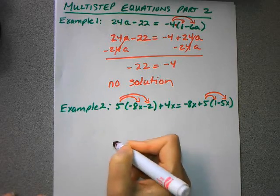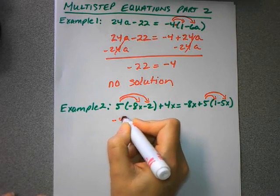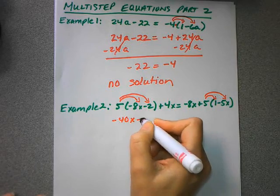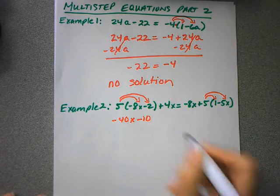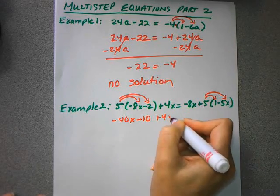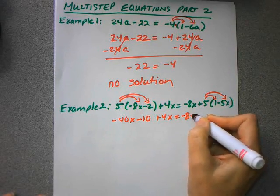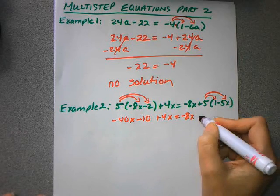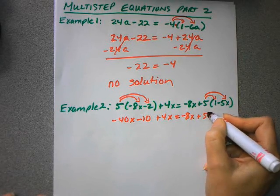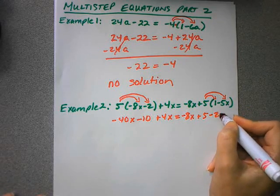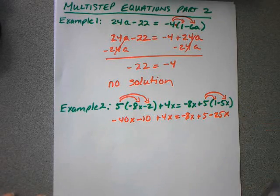So on the left side, 5 times negative 8 is a negative 40x. And then I have a 5 times negative 2 is a negative 10. I still have the 4x. And then on the right side, I still have the negative 8x. I'm going to distribute the 5, so 5 times 1 is 5. And 5 times negative 5 is negative 25x.